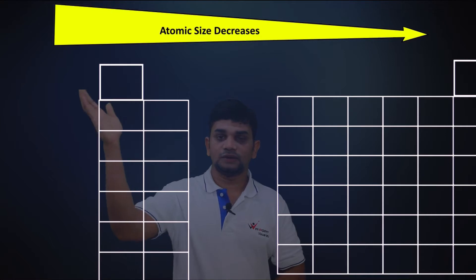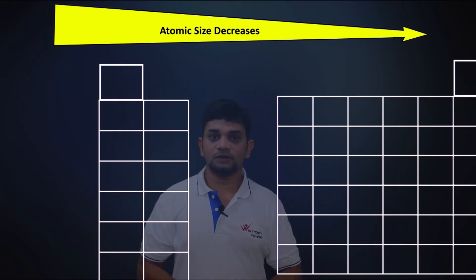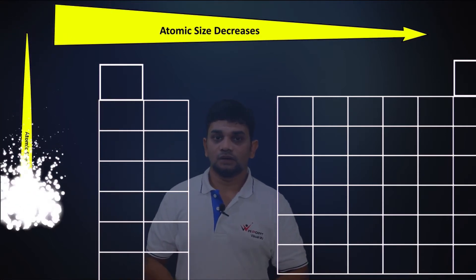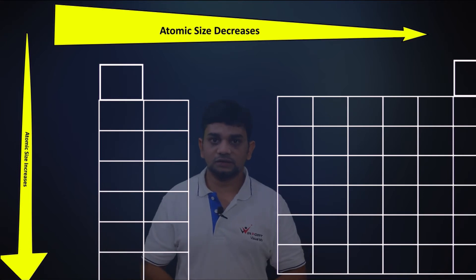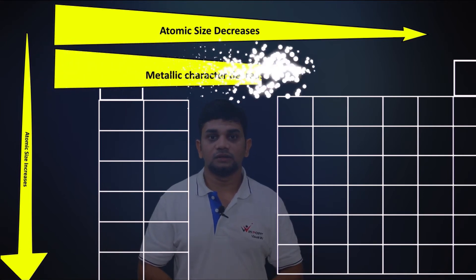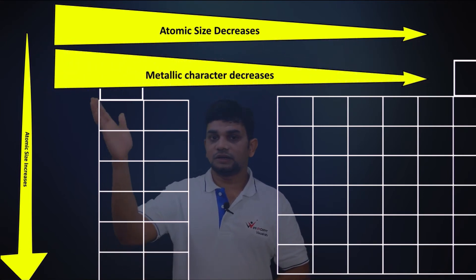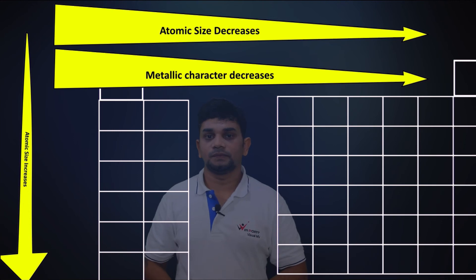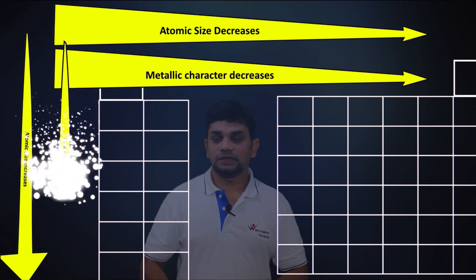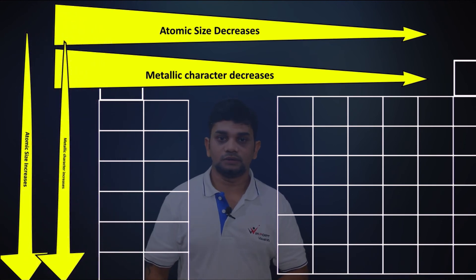Atomic size decreases along the period, and along the group atomic size increases. To summarize: metallic character decreases along the period and increases down the group.